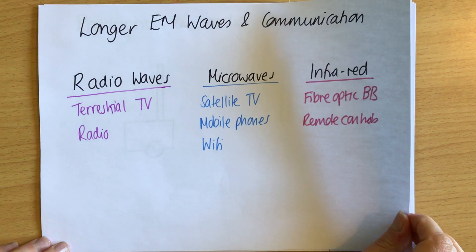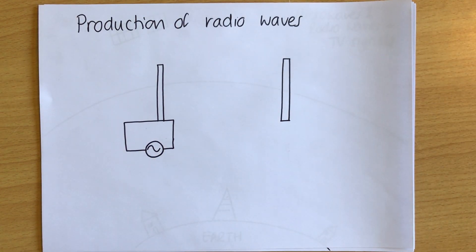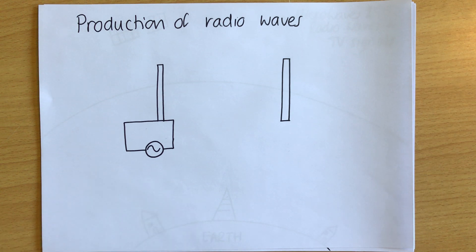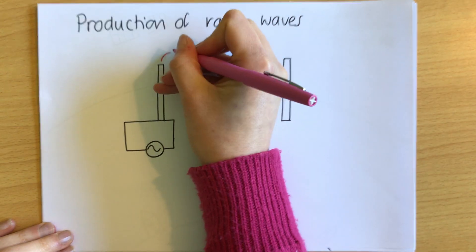There are two main things to look at today, the first being the production of radio waves. I'll preface this by saying it's really hard. If you're learning this for the first time and haven't covered electric circuits or electromagnetism yet, this will be quite tricky. If you're revising it, you might find it slightly easier. The key thing to know is that the production and receipt of radio waves are the same process in reverse — and radio waves are produced and received by aerials.